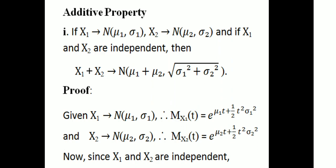We have two random variables with means μ1, σ1 and μ2, σ2 respectively, and the two random variables are independent, that is X1 and X2 are independent. We want to prove that X1 plus X2 is a normal distribution with parameters μ1 plus μ2 and √(σ1² + σ2²). We use the moment generating function to prove this.